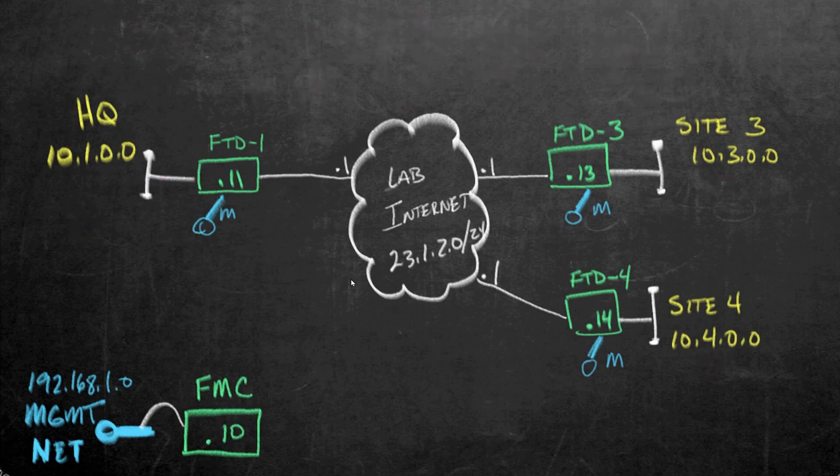All right, so let me clean that up a little bit. And let's talk about networking. Regarding networking at the headquarter location, we're going to use 10.1.0.0 as the IP addressing space with the 24 bit mask. At site three, we'll use 10.3.0. And at site four, we use 10.4.0.